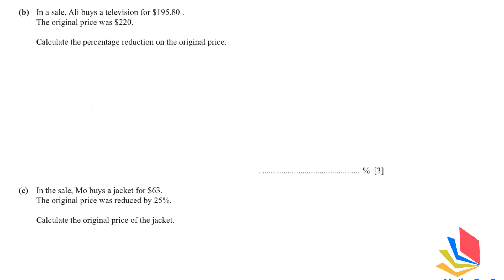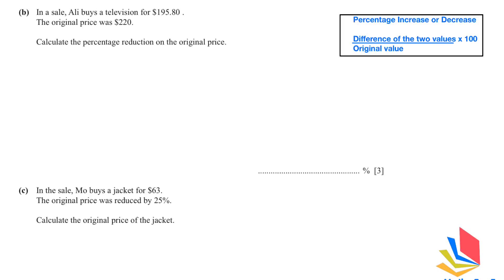In Part B, Ali buys a television in a sale for $195.80. The original price was $220. To calculate the percentage reduction we use: (difference of the two values divided by the original value) multiplied by 100. So (220 minus 195.80) divided by 220, multiplied by 100, gives 11%. Knowing the formulas makes things very easy.